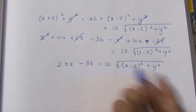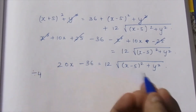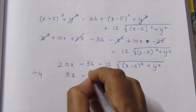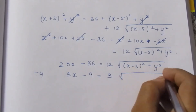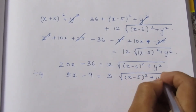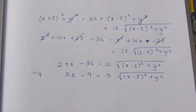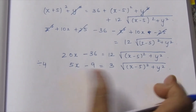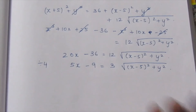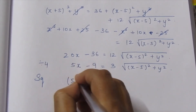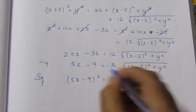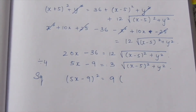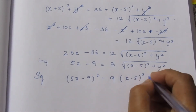Dividing by 4: for 20 gives 5x, for 36 gives 9, for 12 gives 3. So 5x minus 9 equals 3 times root of (x - 5)² plus y². Squaring both sides again: (5x - 9)² equals 9 times [(x - 5)² plus y²].